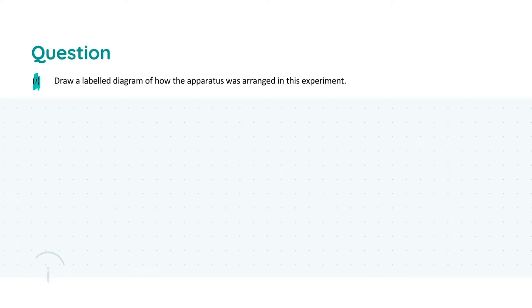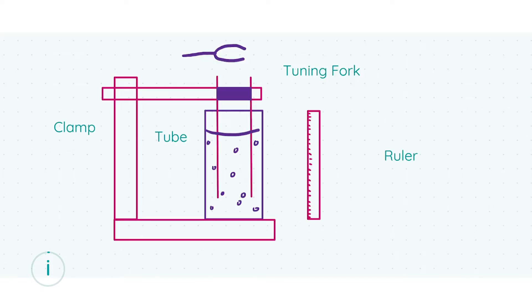So having a look at part one here, we're going to be asked to draw a labeled diagram of how the apparatus was arranged in this experiment. Here we have our labeled diagram, so let's take a moment to label everything in it.